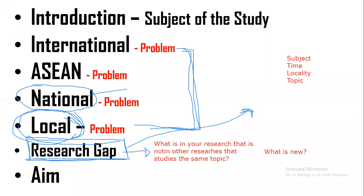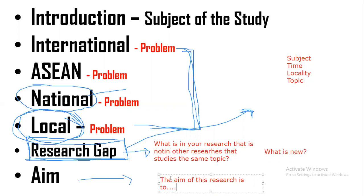Now, for the aims section, you just need to create one or two sentences starting with 'The aim of this research is to...' Give a brief, direct overview of the purpose of your research. For example: are you going to create an alternative antibacterial agent? Are you studying how stress affects learning outcomes? Or is the aim to look at the relationship between stress and interpersonal relationships? Those are the things to consider when writing the background of the study.